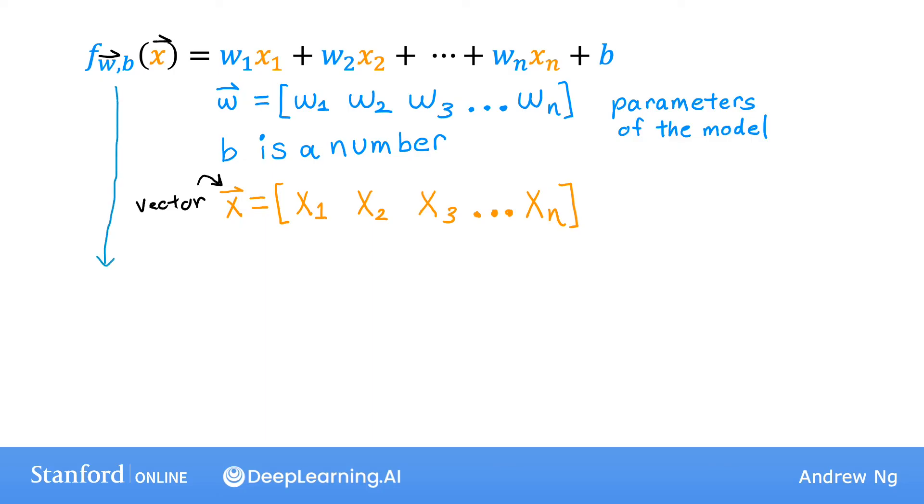So with this notation, the model can now be rewritten more succinctly as f of x equals the vector w dot, and this dot refers to a dot product from linear algebra, of x, the vector, plus the number b. So what is this dot product thing? Well, the dot product of two vectors, of two lists of numbers w and x, is computed by taking the corresponding pairs of numbers w1 and x1 multiplying that, w2 x2 multiplying that, w3 x3 multiplying that, all the way up to wn xn multiplying that, and then summing up all of these products.